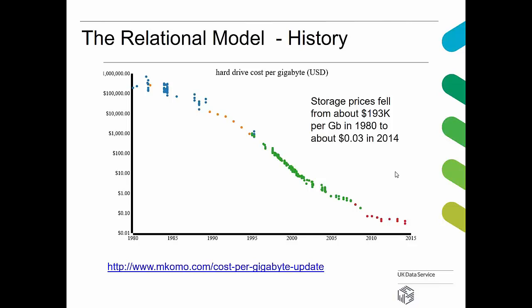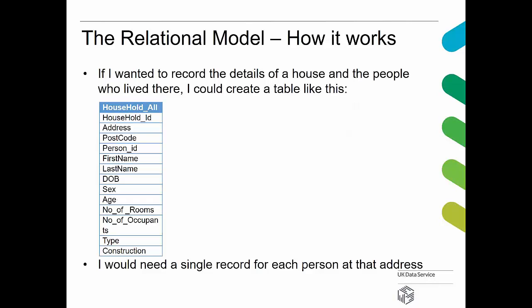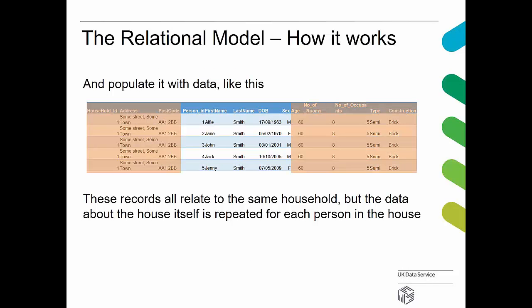Let's look at how the relational model works. Imagine some information on a household: an identifier, address, postcode, the people who live there, number of rooms, type of house, construction — brick, semi-detached, and so on. If you put all that into a single table, the information about the house itself is effectively repeated for each member of the household, which means it's just wasted space. Back in 1980, that would be very much a no-no.